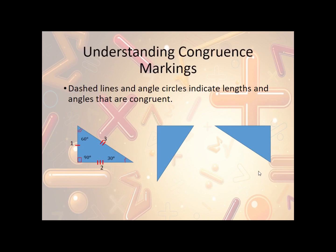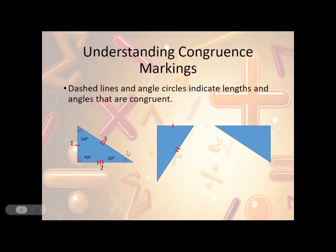Now, understanding the markings. We can use dash lines and angle arcs to indicate the lengths and angles that are congruent. For instance, we have this side here with a single dash. We find its corresponding part and put a single dash there — that means that this side and this side are congruent. Then we do a double dash and find its corresponding side, and we do a double dash there, meaning those two sides are congruent. Then triple dash and triple dash to show those are congruent. So all the three dashes are congruent, all the two dashes are congruent, and all the single dashes are congruent.